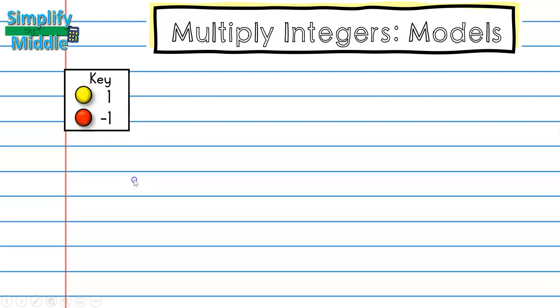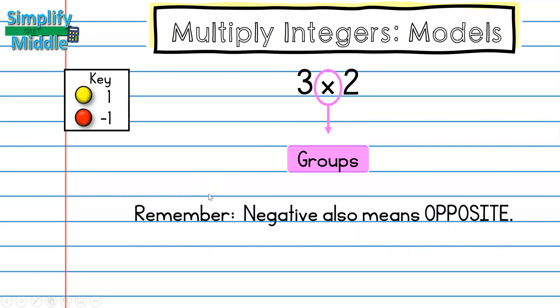We're going to use number lines. It's important to know that in a multiplication problem, the multiply sign actually means groups, so this means three groups of 2, and we're going to be talking about that in the lesson. Just a quick reminder that negative also means opposite. Let's get started.